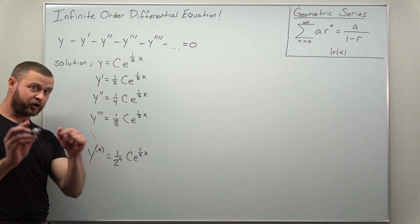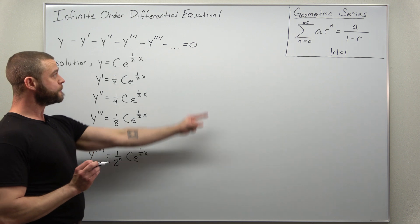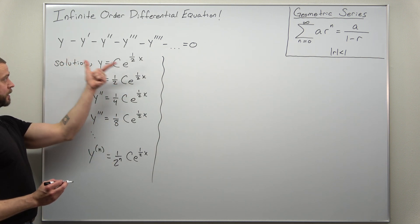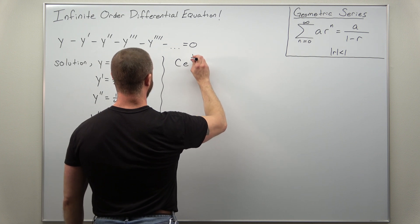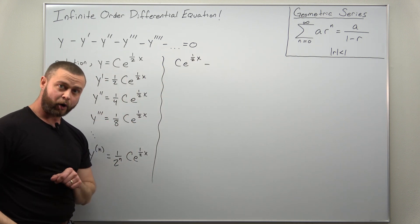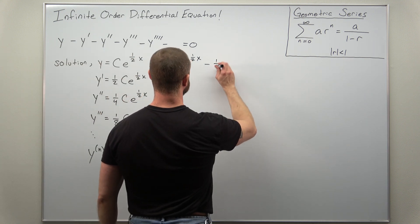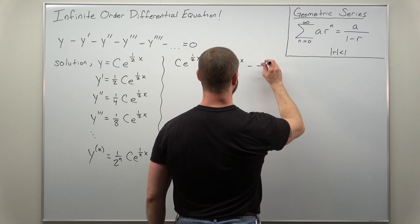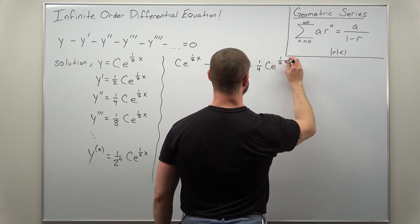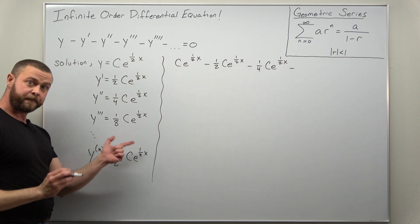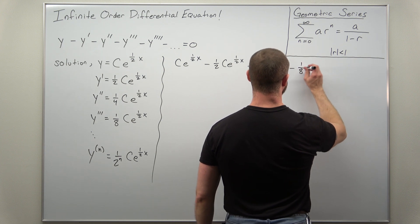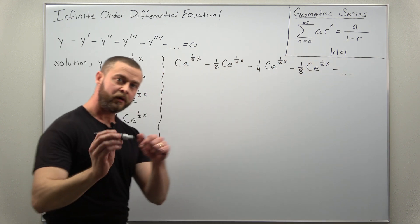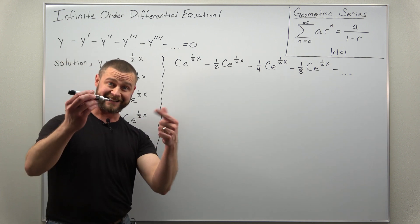Now let's take all these derivatives, plug them into our differential equation, and show we get zero. First we have the function: c times e to the one half x. Then minus all the derivatives: minus one half c e to the one half x, minus the second derivative minus one fourth c e to the one half x, and one more term minus the third derivative minus one eighth c times e to the one half x. Every term contains the exponential function.